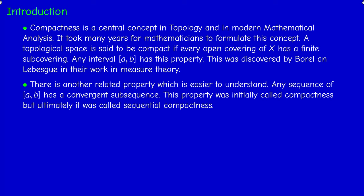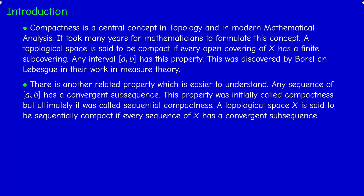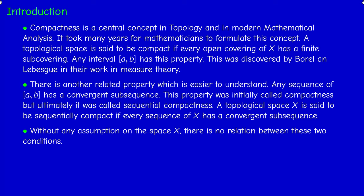Initially this property was called compactness, but ultimately it was called sequential compactness. Here is the definition: a topological space is said to be sequentially compact if every sequence of the space has a convergent subsequence in this space. Without any assumptions on the space X, there is no relation between these two conditions — compactness is one property and sequential compactness is another.